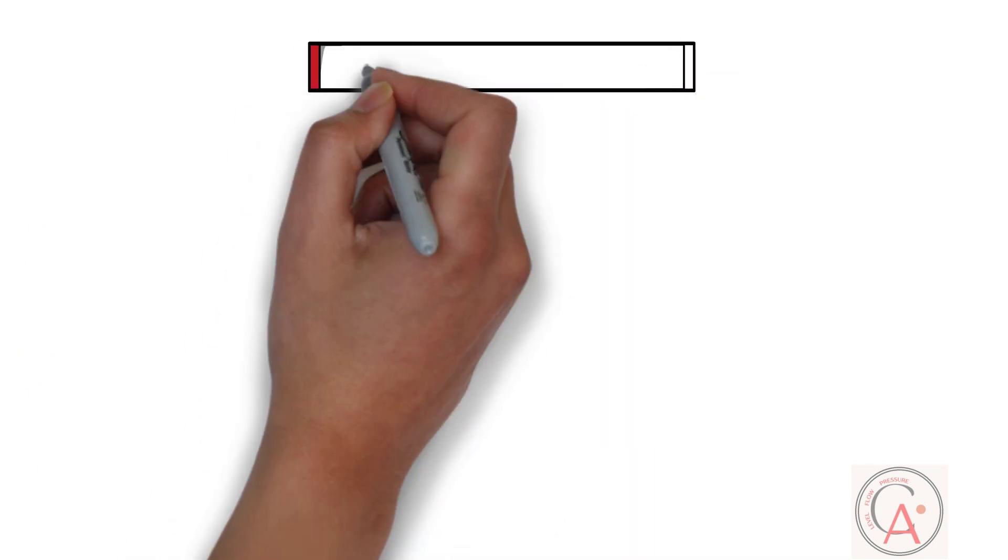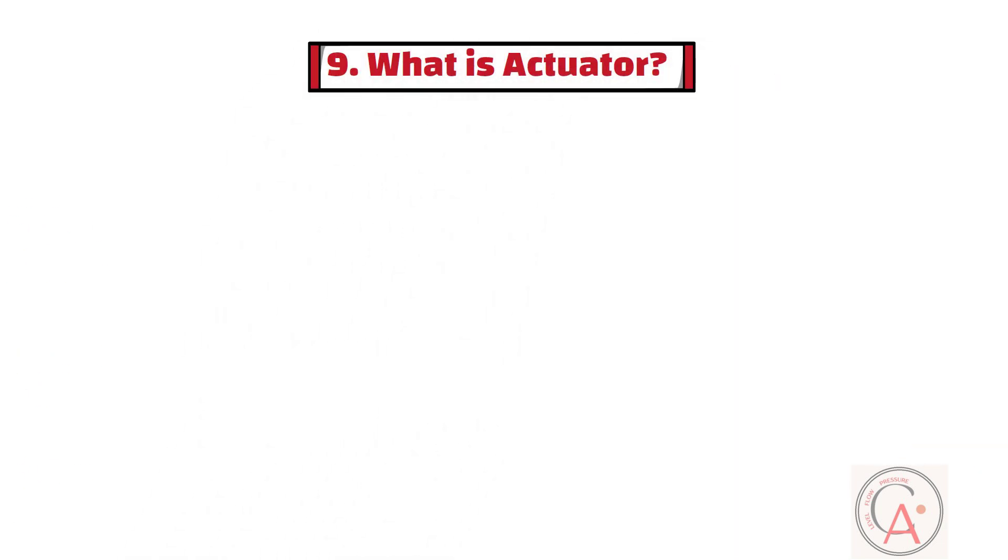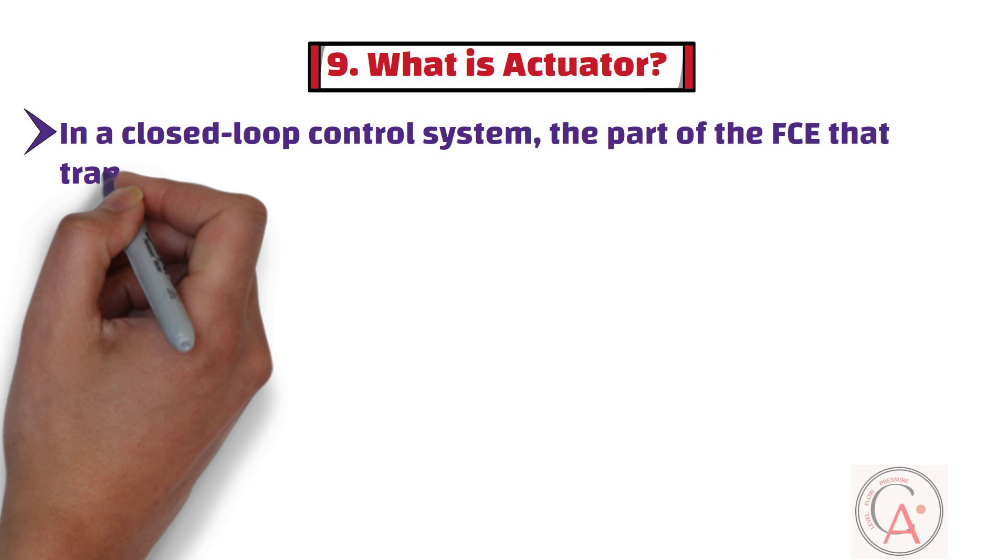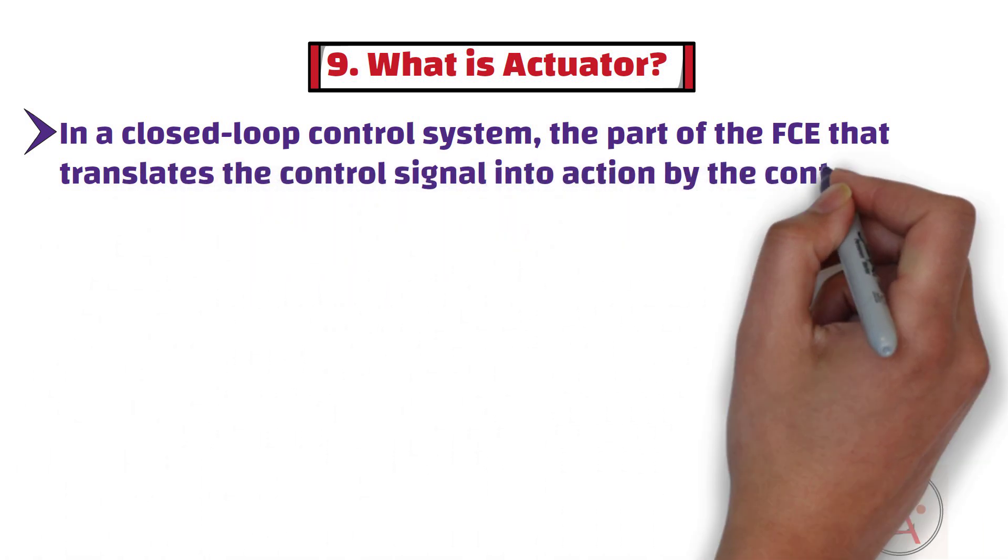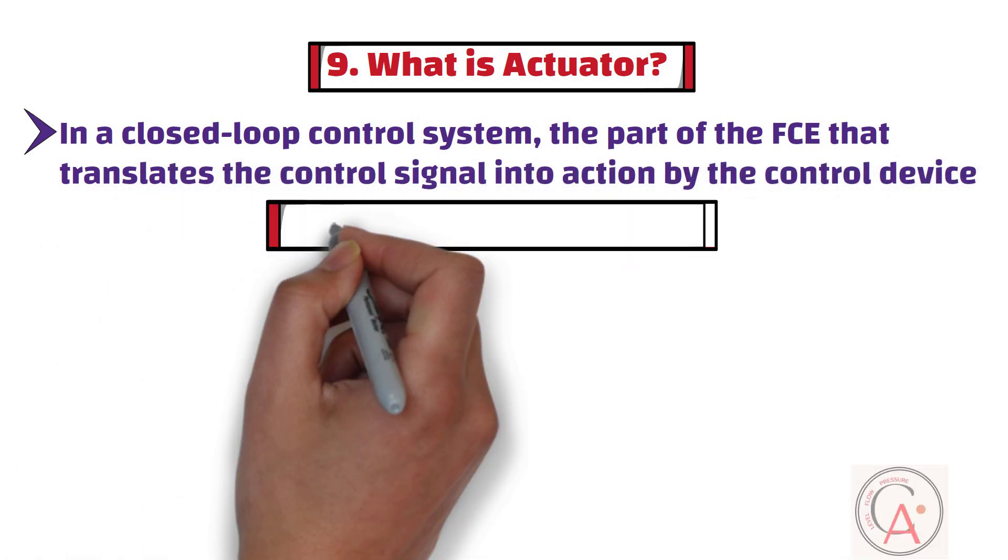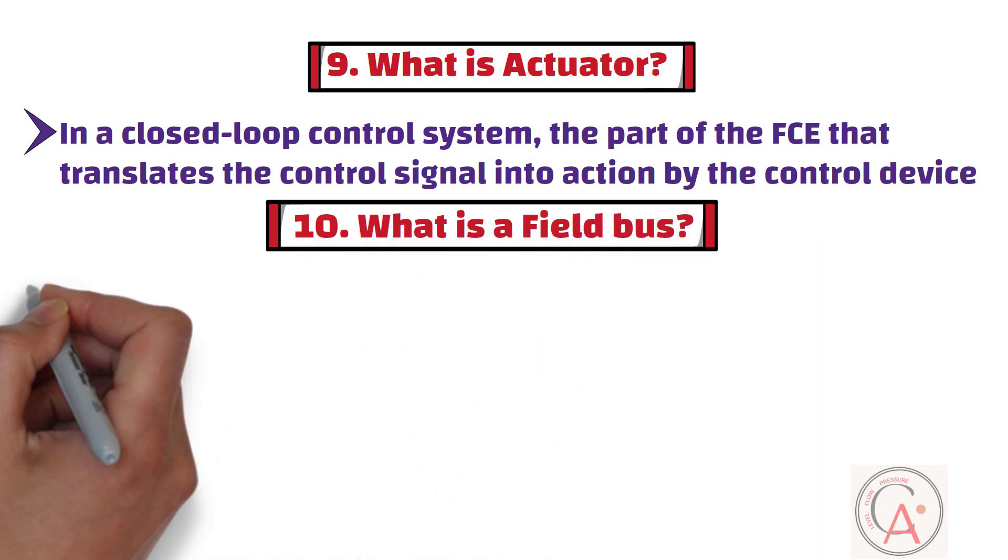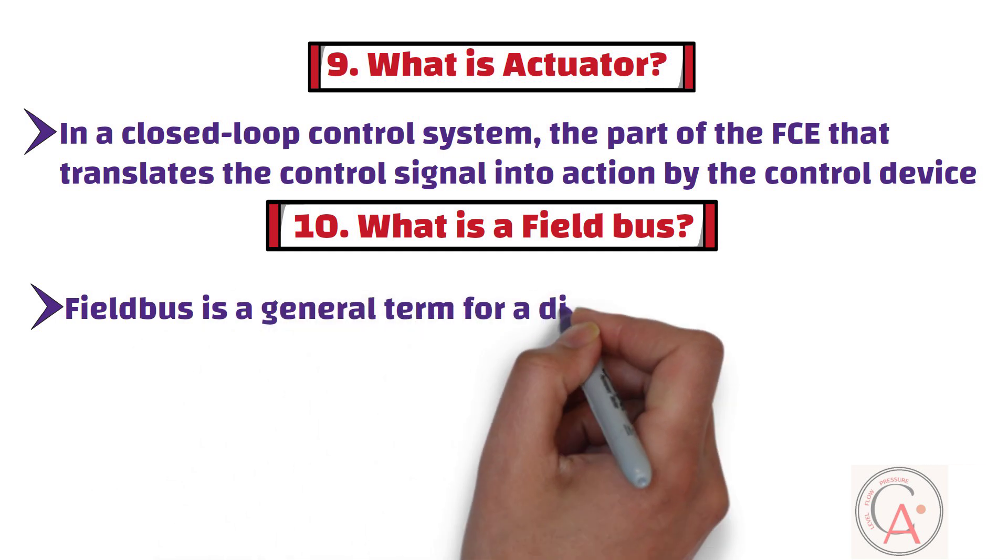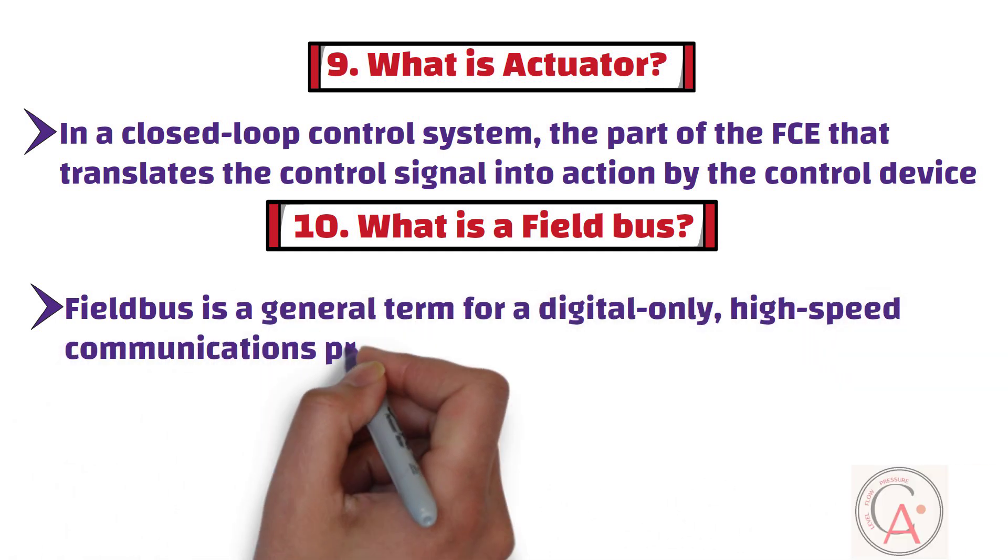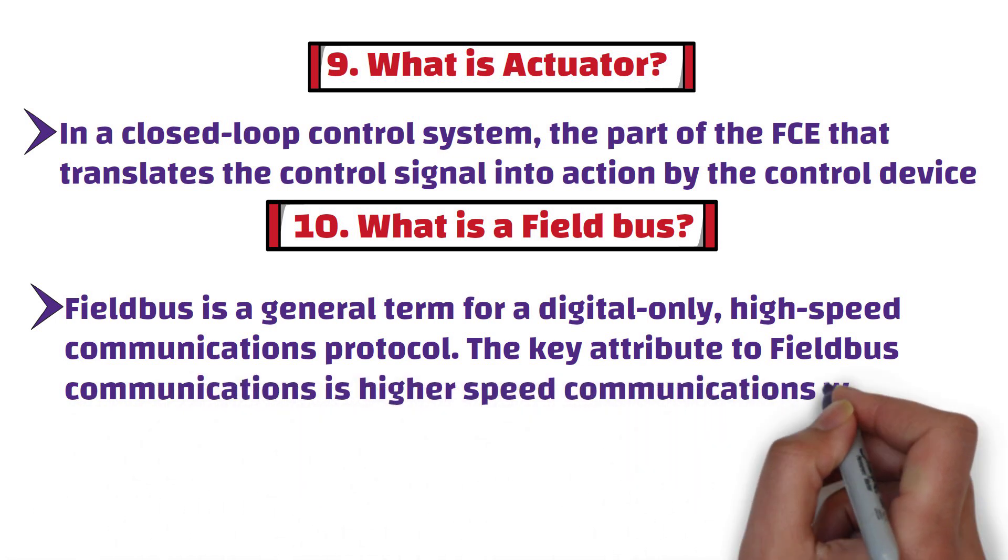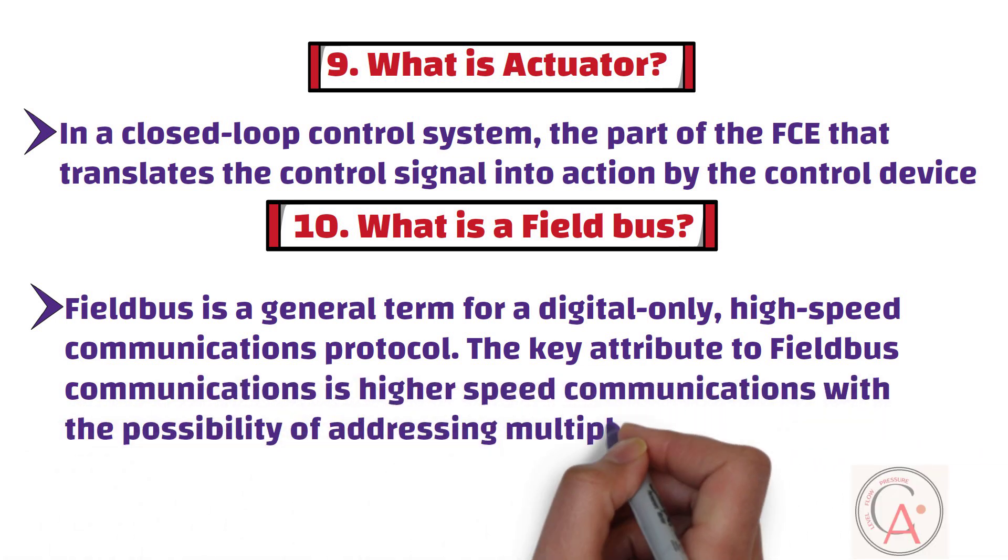The ninth question is, what is an actuator? In a closed-loop control system, the part of the final control element that translates the control signal into action by the control device. The tenth question is, what is a field bus? Field bus is a general term for a digital-only, high-speed communications protocol. The key attribute to field bus communications is higher-speed communications with the possibility of addressing multiple transmitters all on the same field wiring.